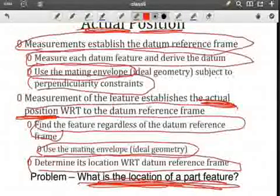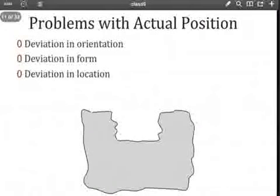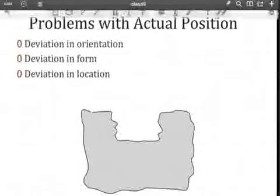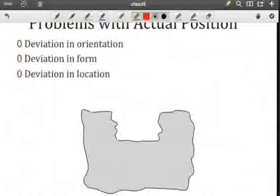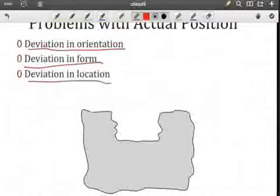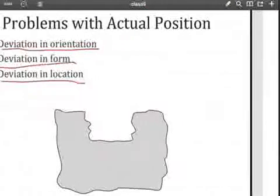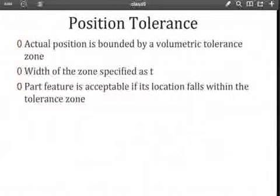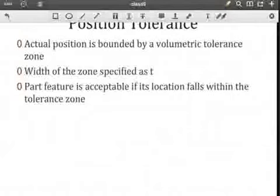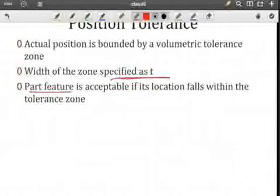When we look at the position of a feature — here using an exaggerated slot feature — the question is where is it located? What we see in this feature is that there is some deviation in orientation of the slot, deviation in shape, and deviation in location. Altogether, they are cumulative and will contribute to the deviation in position. In other words, they affect our ability to satisfy the position tolerance. The actual position is bounded by the tolerance zone, with width T, and the part feature is acceptable if it falls within that zone.